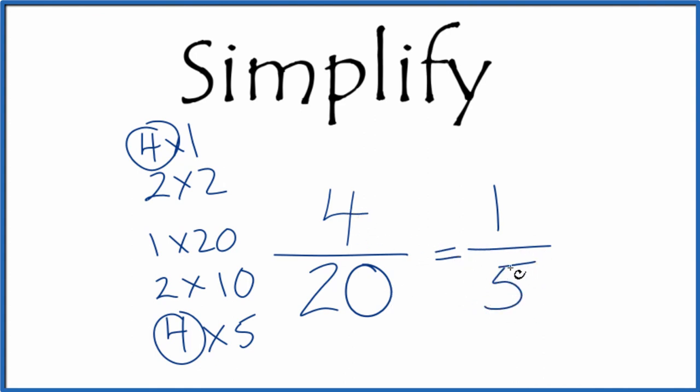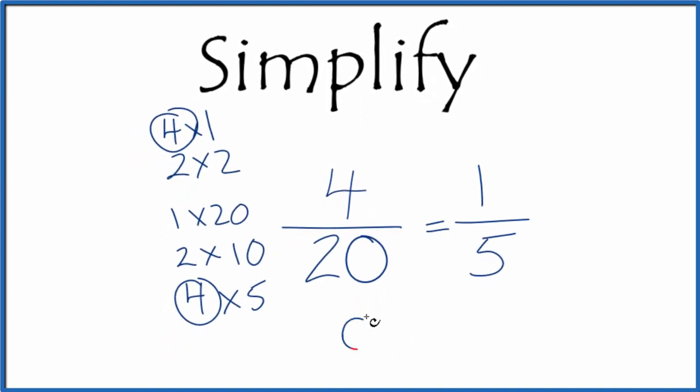These are equivalent fractions. If you divide 4 by 20 you get 0.2. If you divide 1 by 5 you get 0.2.